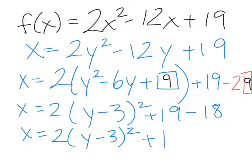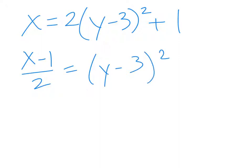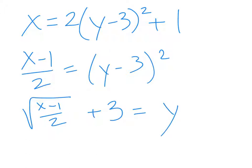At this point I'm back to where I started this video. I'll go ahead and solve for y — it's a lot easier now. I just need to subtract 1, divide by 2, take the square root, and then add 3. So x minus 1 over 2 equals (y minus 3) squared; take the square root of both sides and add 3, giving us the square root of (x minus 1) over 2, plus 3 equals y. That's the inverse of the original problem. When given a quadratic in standard form, completing the square — or converting to vertex form — is the best way to find the inverse.